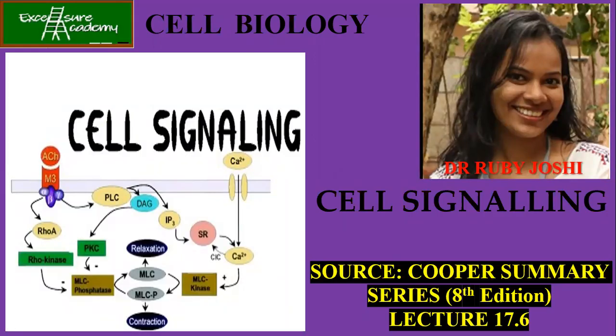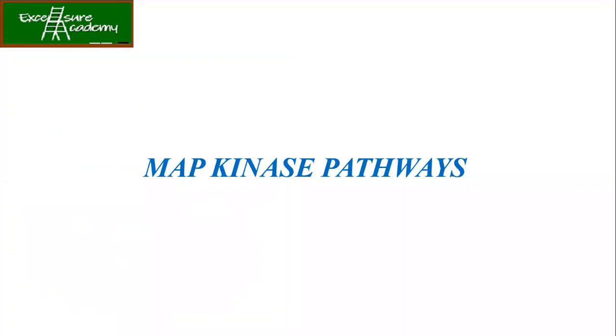Hello guys and welcome back to Excelsior Academy. Today we are going to do the sixth lecture from the Cell Signalling series, as part of the Cooper Summary. This lecture is really important because in it we are going to talk about the MAP kinase.